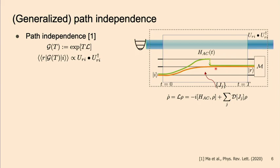If you think about this carefully, this property is very natural: if you are doing the experiment, it means you don't really care about what's happening in the middle of the process — you could have arbitrary errors. What you only need to do is look at the measurement outcome, and once you know that, you know which deterministic unitary was applied to the system. From the fault-tolerance perspective, this essentially means there's no error propagation from the ancilla to the bosonic mode, because there's no information lost to the environment as long as you can keep track of the ancilla measurement outcome.